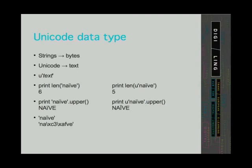Let's look at a few examples. The first row calculates the length of a string and a Unicode for the word 'naïve'. The length of the string is 6, while the length of the Unicode is 5, which is the actual number of letters. The string is longer because it uses 2 bytes to store the special letter 'ï'. The upper method called on the string does not correctly convert the lowercase 'ï', while the same method on the Unicode data type converts the letter correctly. You can also see the 2 bytes the string uses to store that letter.